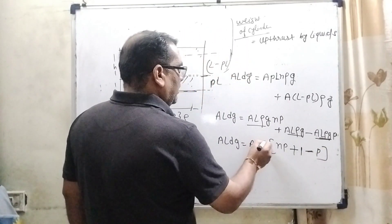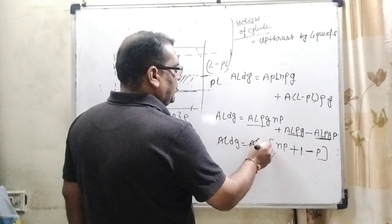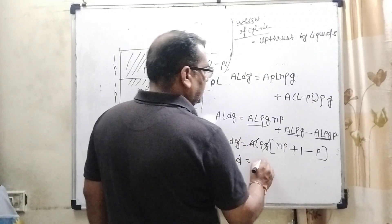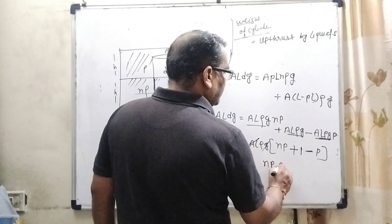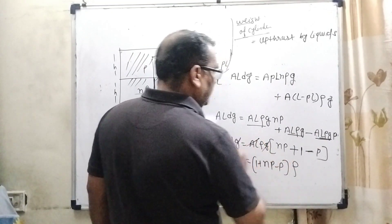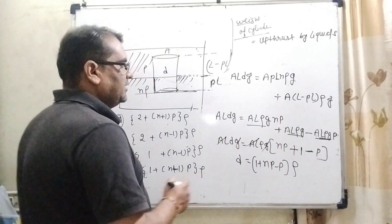So ALρg and ALg cancel out, giving us d equals np minus p plus 1, times ρ.